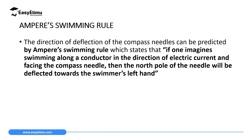So the direction of deflection of the compass needle can be predicted by the Ampere swimming rule, which states that if one imagines swimming along a conductor in the direction of an electric current and facing the compass needle, then the north pole of the needle will be deflected towards the swimmer's left hand. So this rule needs you to imagine, and you have to imagine that.